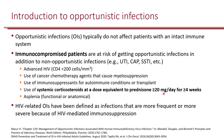Asplenia can be either functional — for example, patients with sickle cell disease will have a non-functioning spleen — or anatomical, meaning it was surgically removed via splenectomy.